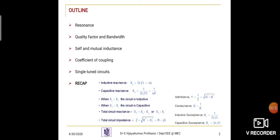Before entering into this video lecture for unit five, I am giving a recap for the RLC circuits. R is resistance, L is an inductor, C is a capacitor. For inductive reactance, represented by the symbol X subscript L, it is equal to 2πFL, where F is the frequency of the system and L is the value of the inductor. It is also represented as XL equals omega times L, where omega represents 2πF.